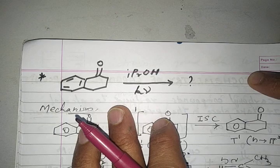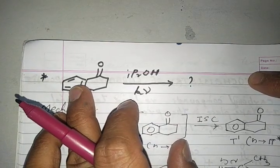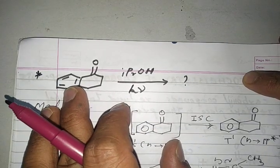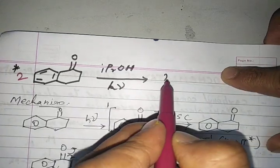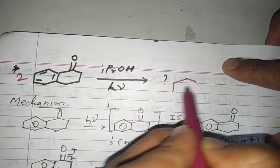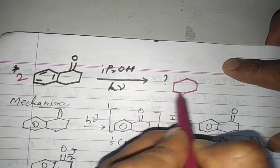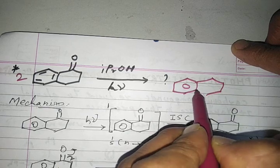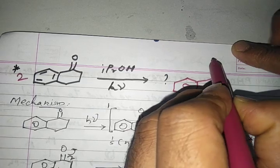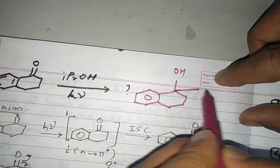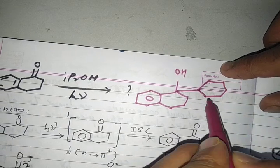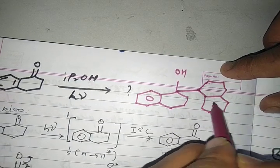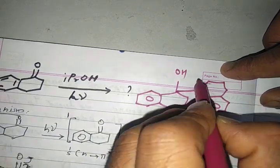One more example: if we take this compound and consider two molecules, we can directly write the product. The product formation takes place like this — again, this is a diol formation. We can write a cyclohexane ring with the diol substituents accordingly.